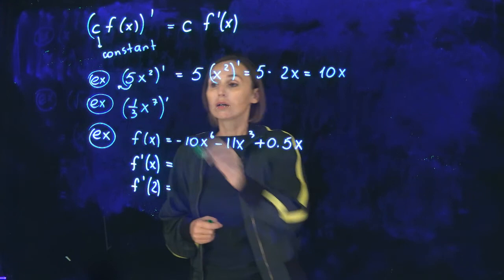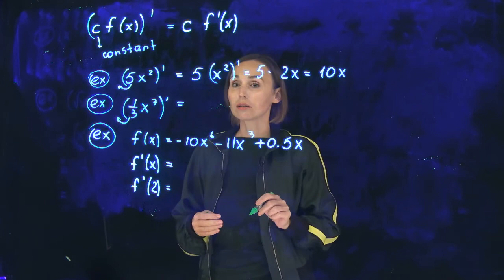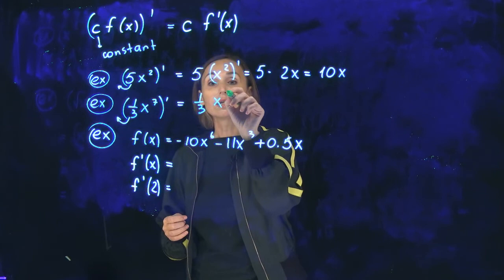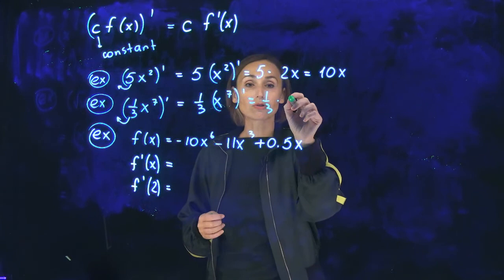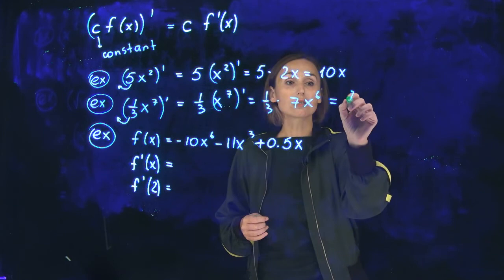Right here, coefficient 1 third, constant, can be written outside. So let's do it. This is 1 third times x to the power 7 prime. This is 1 third, derivative of x to the power 7 is 7x to the 6. 1 over 3 times 7 is 7 over 3.